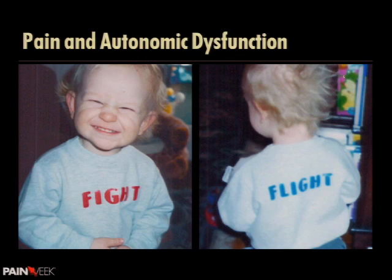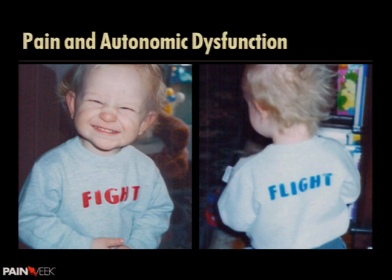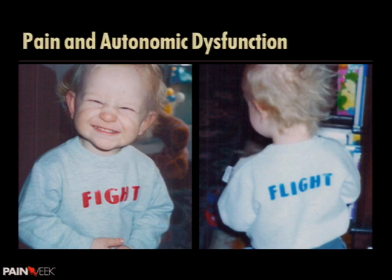The autonomic nervous system is the fight-or-flight nervous system — the system involved in getting us to run away. Of course, you can't run away from a limb affected by complex regional pain syndrome, or as some people still call it, reflex sympathetic dystrophy.